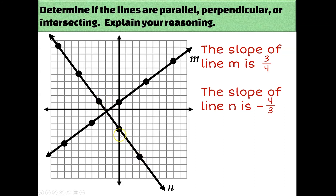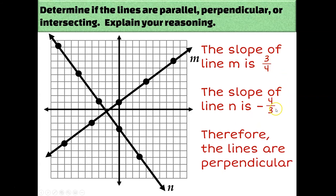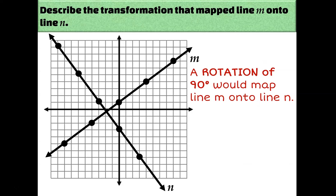Remember, you can count the opposite direction as well — up and to the left, or down and to the right. Based on our slopes of three fourths and negative four thirds, I can tell that these two lines are perpendicular because their slopes are opposite reciprocals. One is positive, one is negative — that's what makes them opposite. And they're reciprocals because they're the upside-down version of each other: one has a three on top and four on bottom, the other reverses that. Since these two lines are perpendicular, a rotation of 90 degrees would map one onto the other.